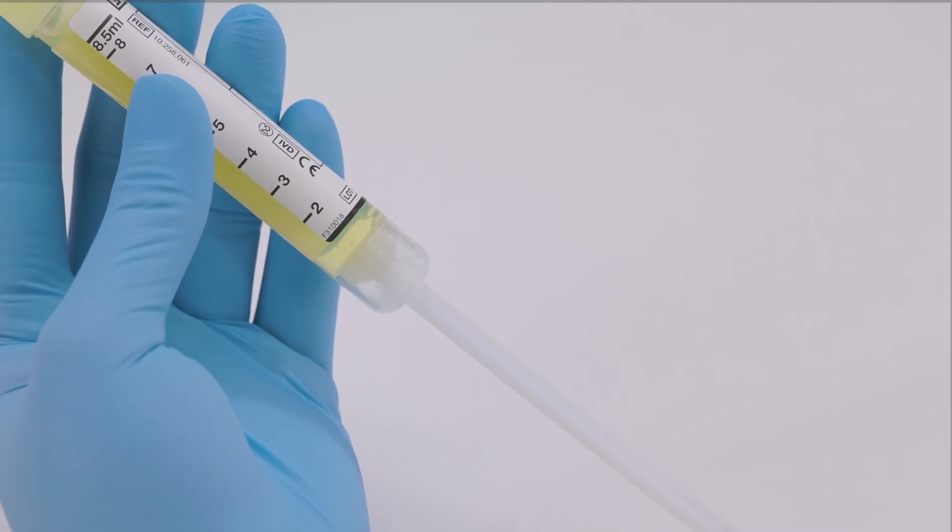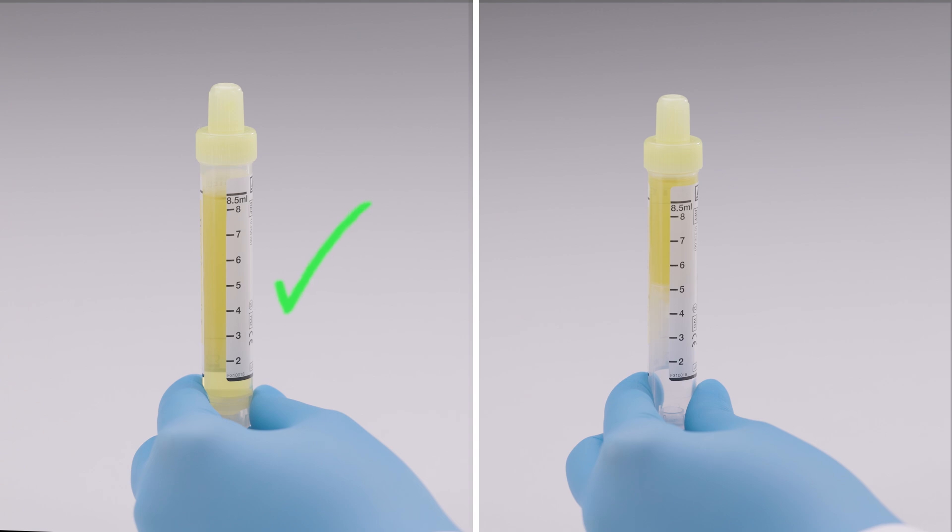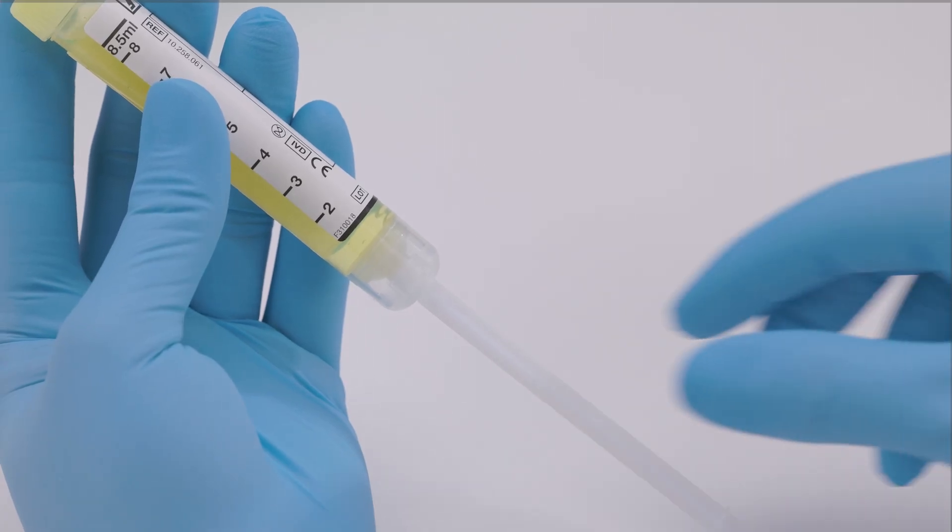Important: the piston rod needs to be pulled completely to the bottom of the tube during sample collection so that it breaks off easily. This also avoids insufficient urine volume in the tube. Break off the piston rod.